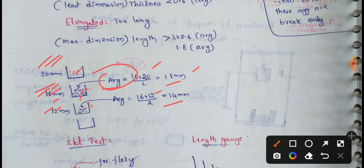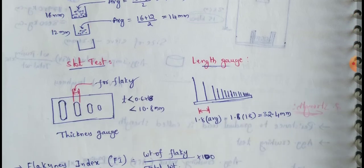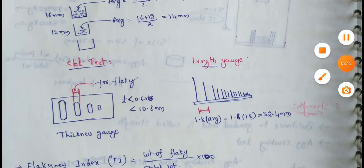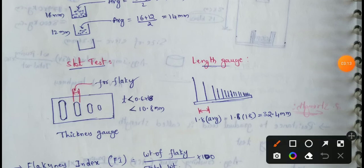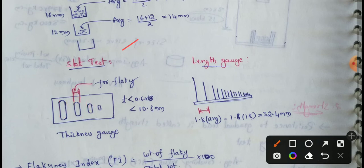The first test is the slot test. We use a thickness gauge and pass the aggregate particles through the slots. If the aggregate passes through the hole, we record its weight as flaky material.